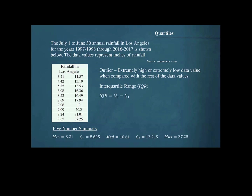The interquartile range is the difference between the first and third quartiles. Substituting these values, we find that the interquartile range for this data set is 8.61.